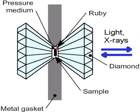Achieving temperatures found within the interior of the Earth is just as important to the study of mineral physics as creating high pressures. Several methods are used to reach these temperatures and measure them. Resistive heating is the most common and simplest to measure. The application of a voltage to a wire heats the wire and surrounding area.